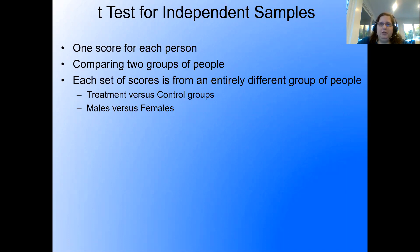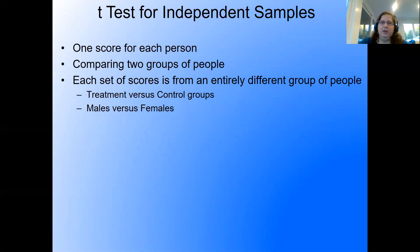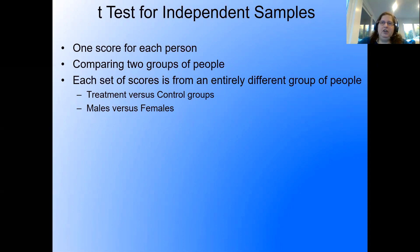We have one score for each person, which reminds us of the z-test or t-test for a single sample, because that also had one score for each person. But what's immediately different is that now we're going to compare two groups or two samples of people. With the z-test and t-test for a single sample, we were comparing a sample to a population. Now we're comparing two samples to each other, and each set of scores comes from an entirely different group of people.